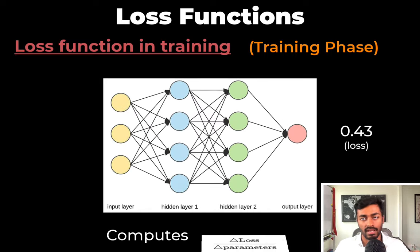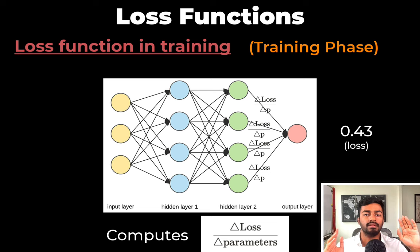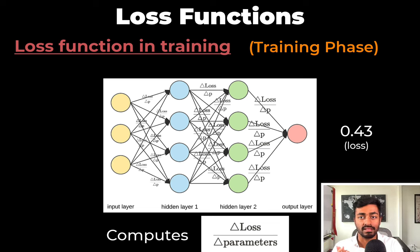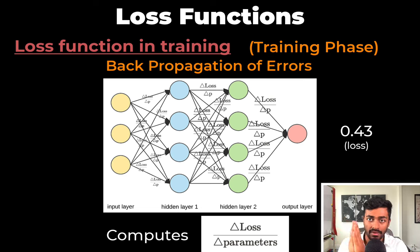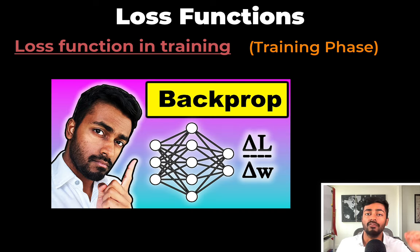Now this loss is used to compute a gradient, that is the change in loss with respect to every network parameter. Now this calculation happens in the later layers and then into the initial layers. And so this phase is called backpropagation of errors or simply backpropagation. For more details on this backpropagation process I have a video right here.